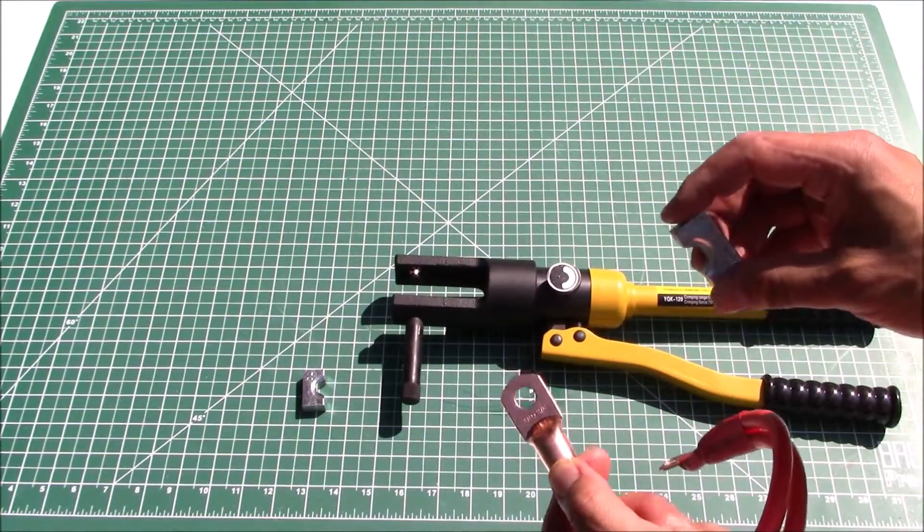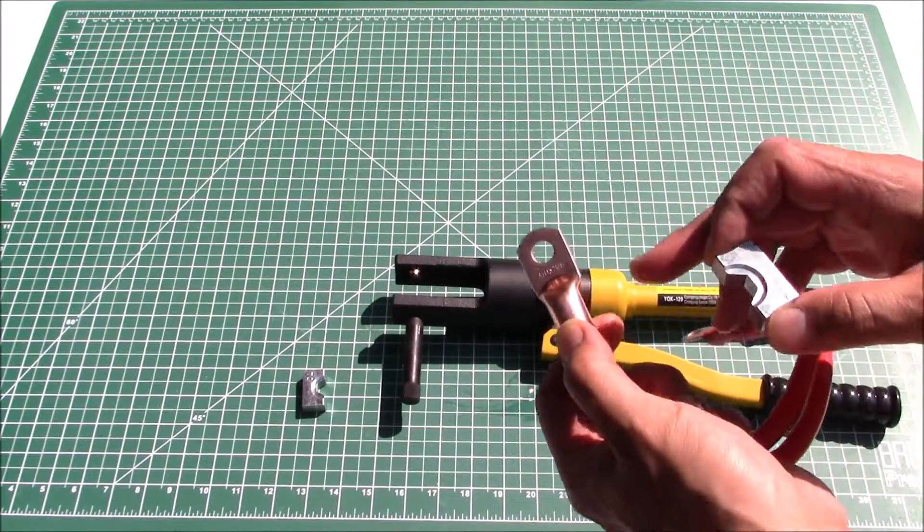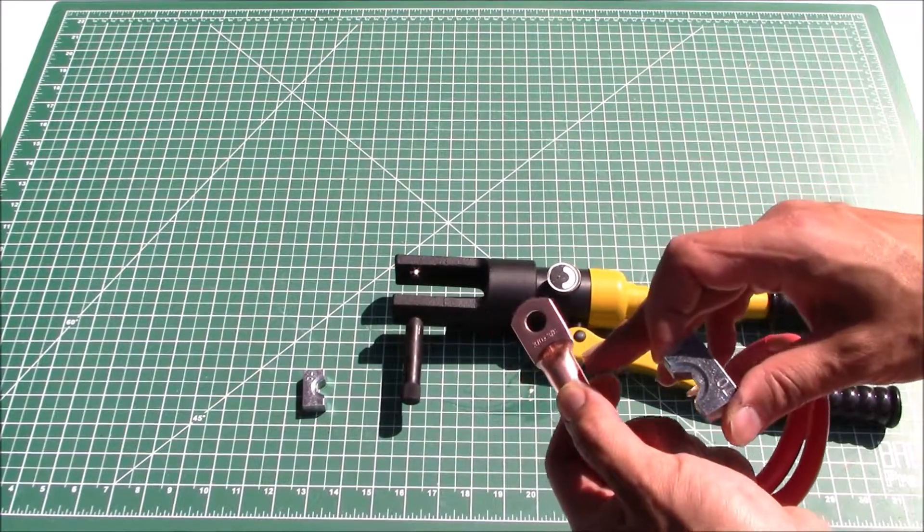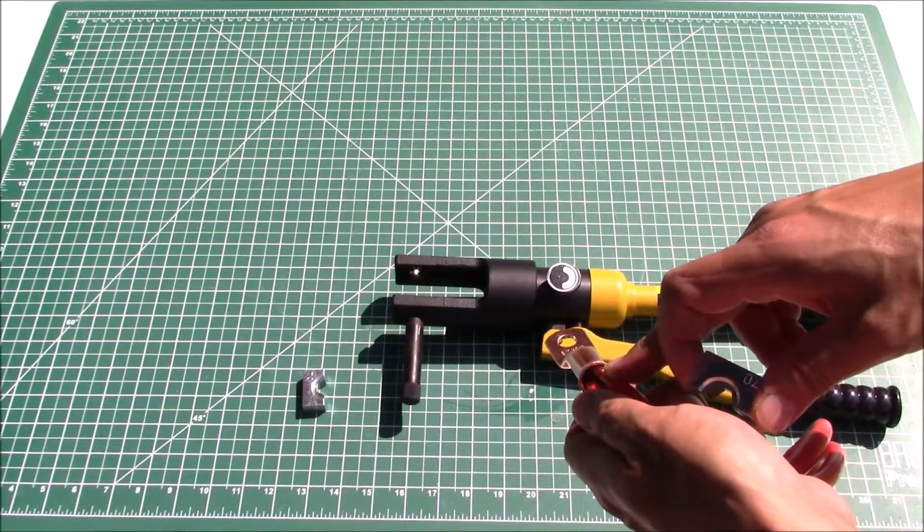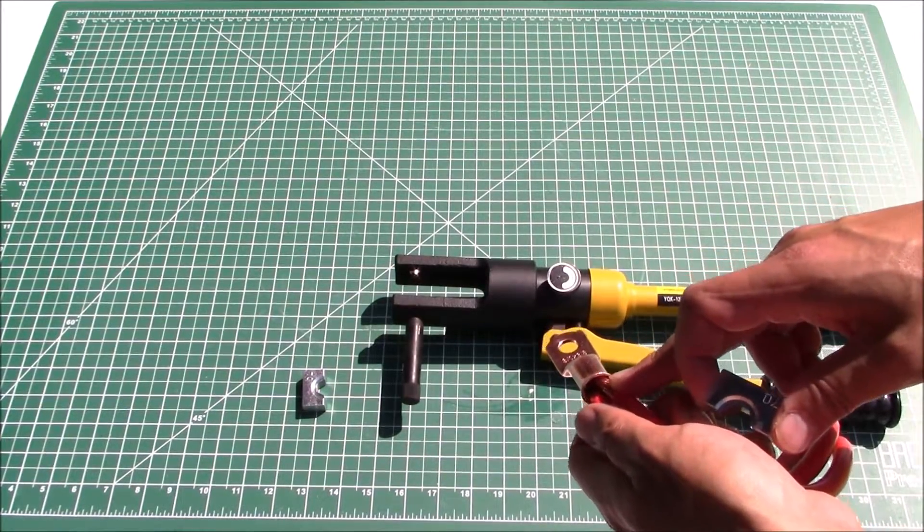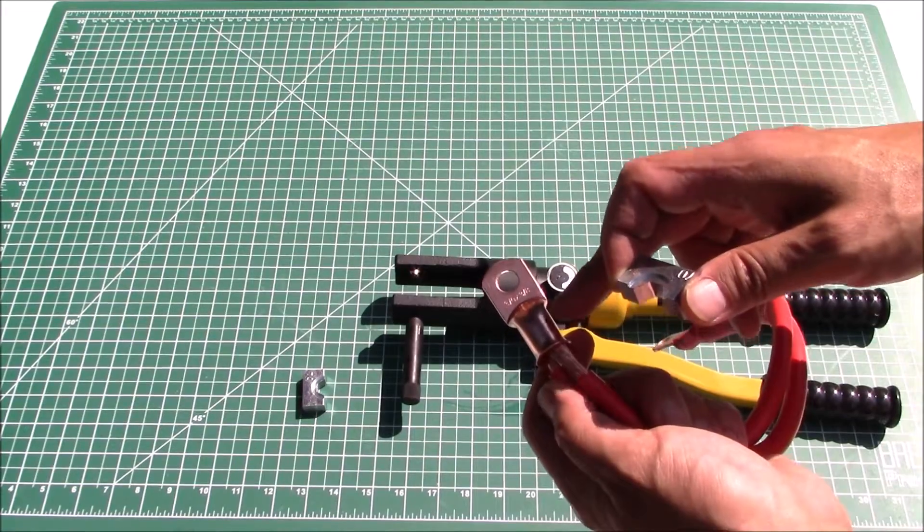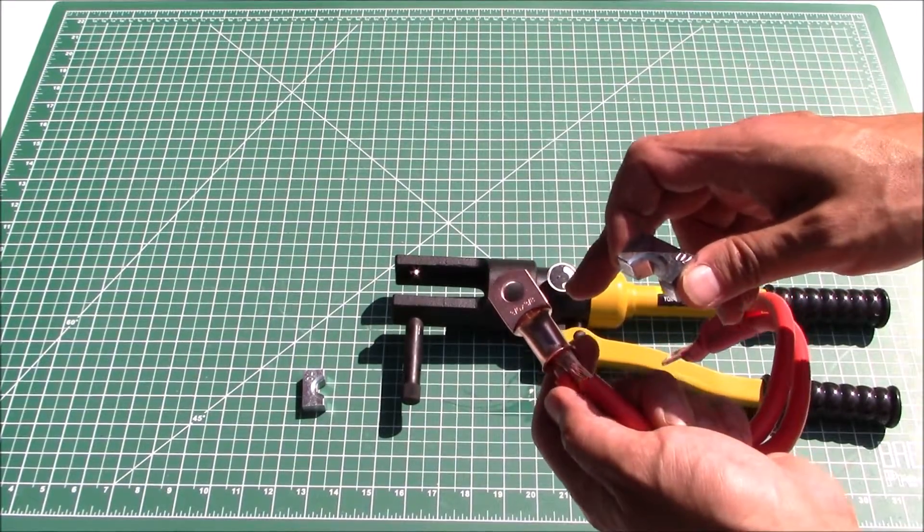In this case I'm going to use these dies which are actually a tiny bit smaller than advertised or spec, but again that's because the wire inside is a little bit smaller than it's supposed to be. So I'm going to need to crush this lug or crimp this lug a little bit tighter than necessary.